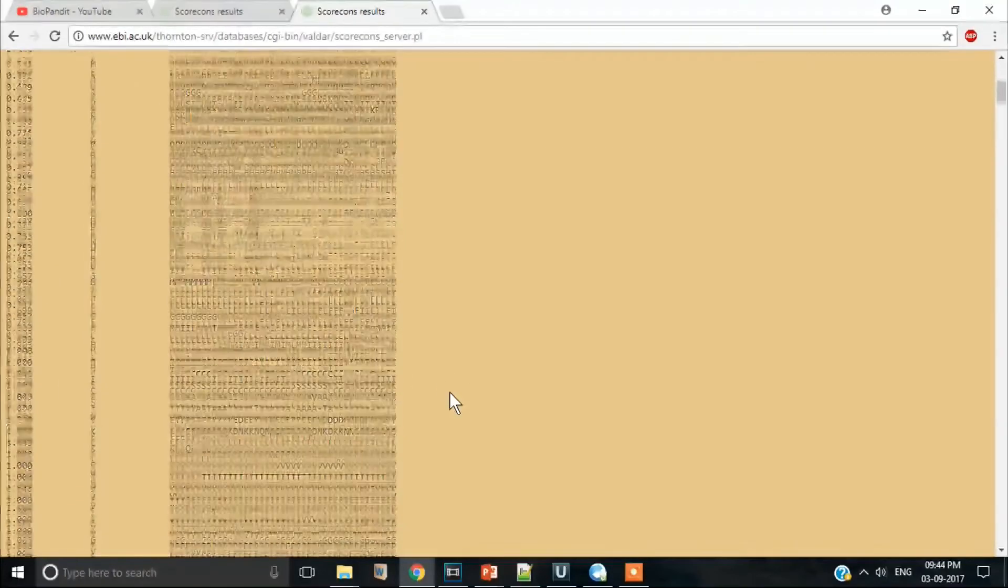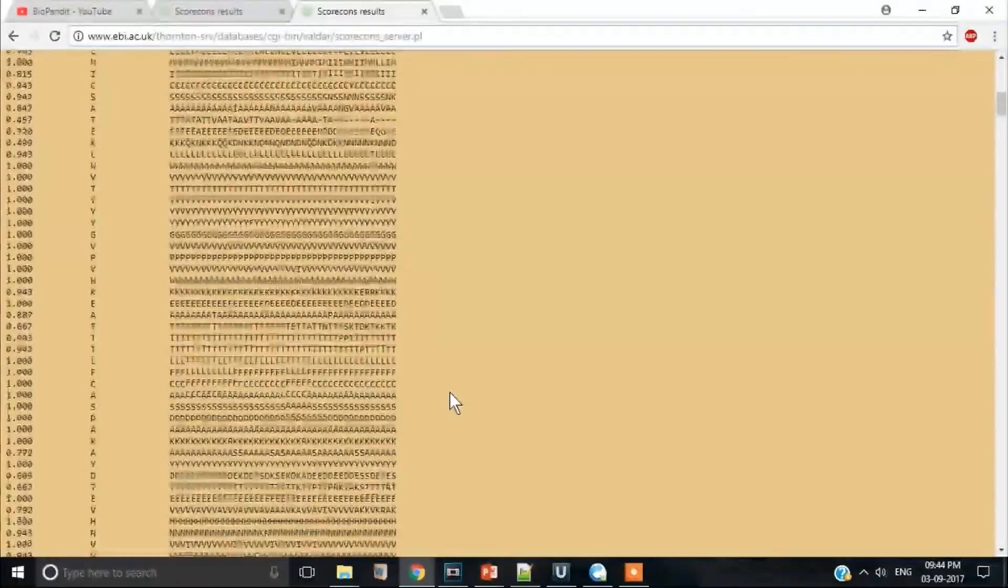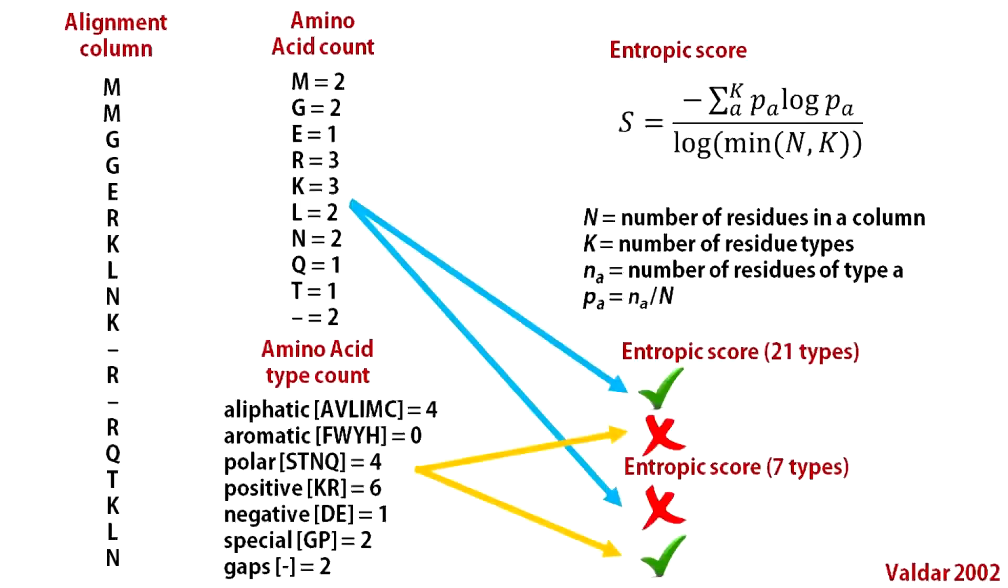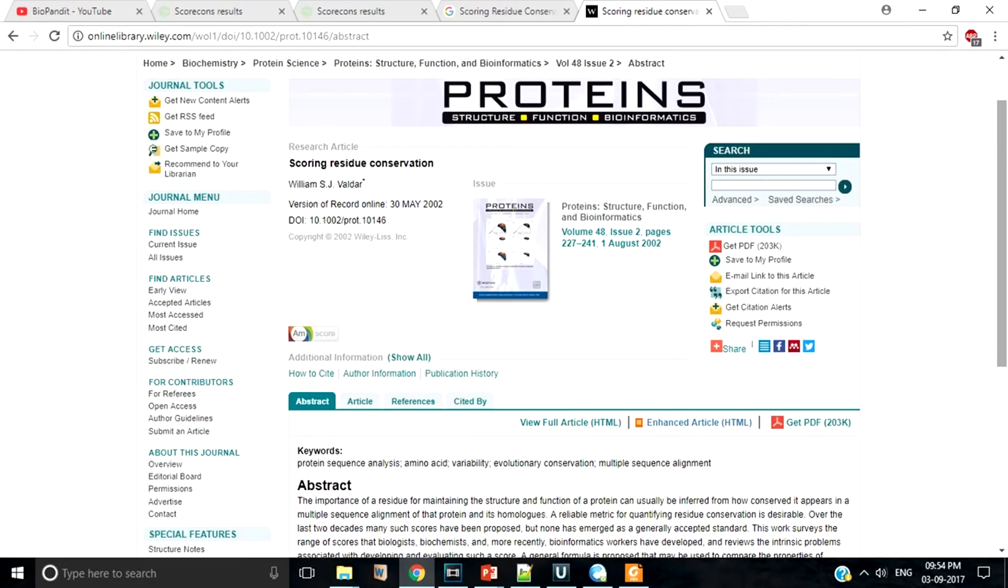Amino acid variations at each residue site is provided along with a conservation score within the range 0 to 1. See how a simple normalization of Shannon entropy scores does this trick. You have amino acids and gaps. You compute the number of different amino acids in a column and the 7 different classes they belong to. Then this is the conservation score equation in this case. For the 21 types you consider all 20 amino acids and gaps. For the 7 types you consider the 7 classes of amino acids.